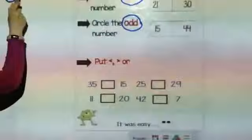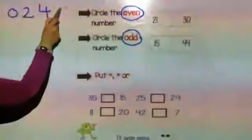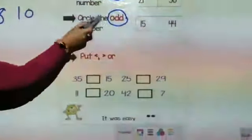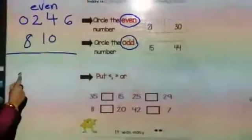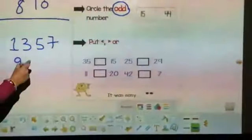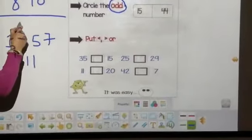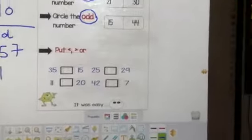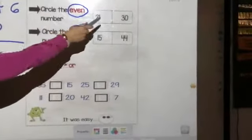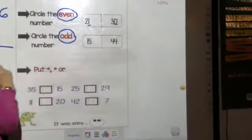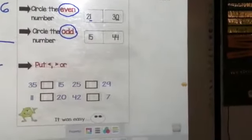The even numbers start from 0, 2, 4, 6, 8, and 10. The odd, this is the odd. The odd numbers start from 1, 3, 5, 7, 9, 11. Let's see here the numbers. 21 and 30. Of course, we can put our eyes to the right number and see. Is it even or odd?